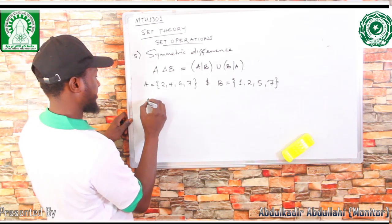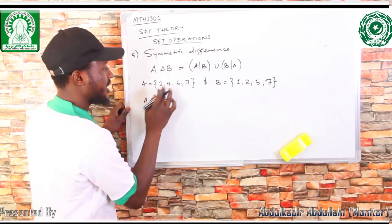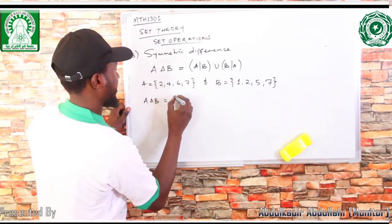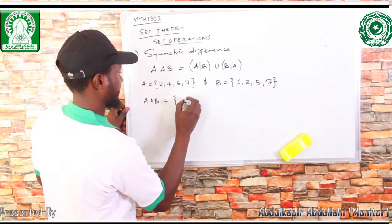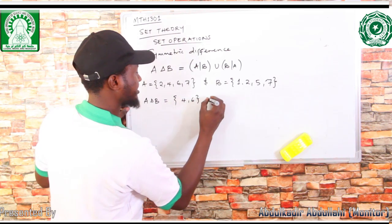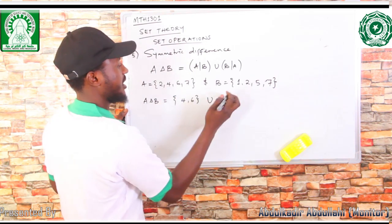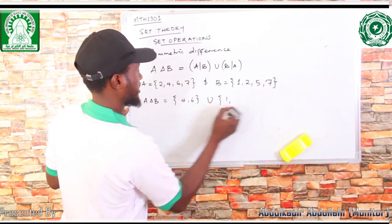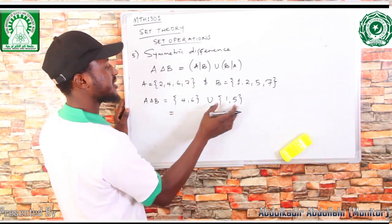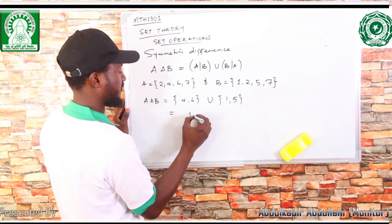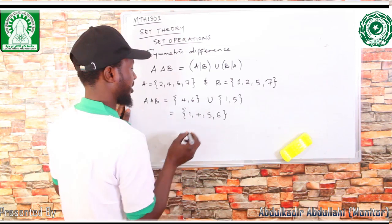A symmetric difference B means all elements in A that are not in B. In A but not in B, we have 4 and 6. Then union B difference A, which is the elements in B that are not in A, which gives us 1 and 5. So uniting the results, we get {1, 4, 5, 6} as the symmetric difference.